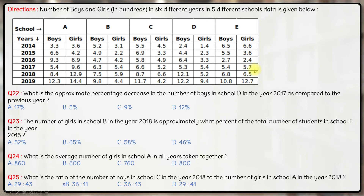Hello everyone. Coming to the DI set of this paper, we have the number of boys and girls in 6 different years in 5 different schools — the data for this is given. These are 6 different years: 14, 15, 16, 17, 18, 19, and then 5 different schools: A, B, C, D, E. The data given to us is in hundreds, meaning the number of boys in school A in 2014 is 3.3 × 100 = 330.